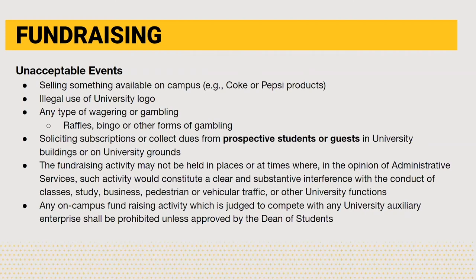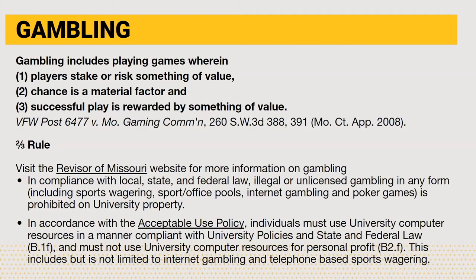This slide includes examples of unacceptable fundraising events. Gambling includes playing games wherein a player stakes something of value to chance, a material factor is present, and successful play is rewarded by something of value. If an activity meets two out of three of these characteristics, then the activity is not considered gambling. ORG uses the two-thirds rule when evaluating whether an organization's activity is or is not gambling. More information about gambling can be found on the Revisor of Missouri website, and if your organization is unsure, please contact ORG for assistance.